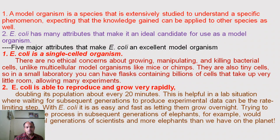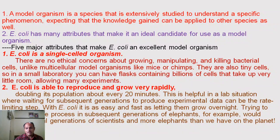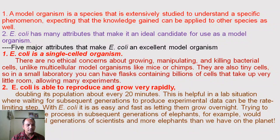The second attribute is that E. coli is able to reproduce and grow very rapidly. The doubling time — the time to double a population of E. coli — is about 20 minutes. This short generation time is very helpful in laboratory situations, as it is not a rate-limiting step. After 20 minutes, the E. coli cells multiply, so in less time a large population can be formed.